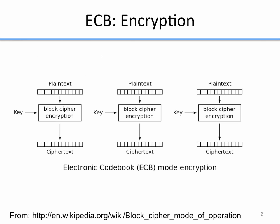Looking at the diagram: you take your plaintext at the top, break it into fixed size blocks — in this case there are three of them — and encrypt each block with the same key, getting out your ciphertext blocks. You put those ciphertext blocks together and that becomes your ciphertext. Straightforward, makes sense, intuitive.